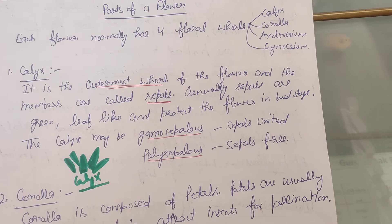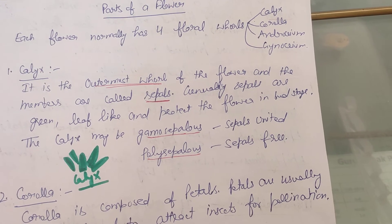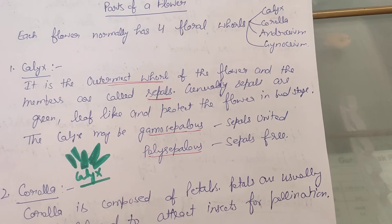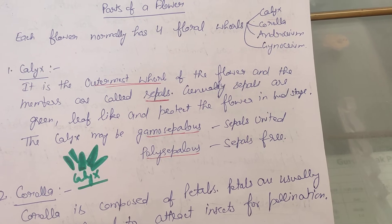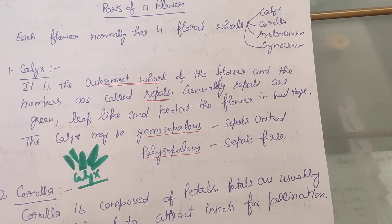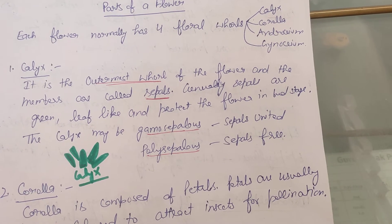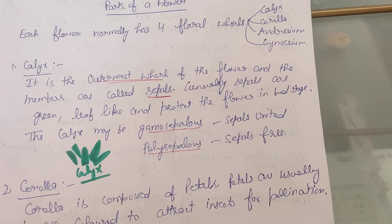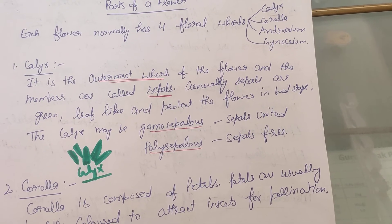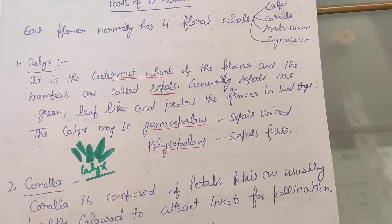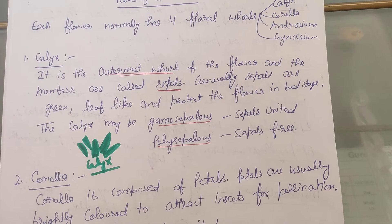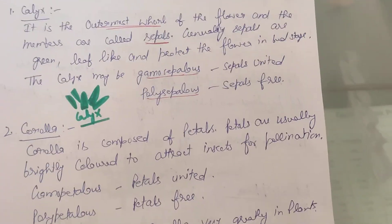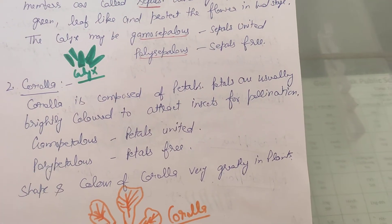The calyx may be of two types: gamosepalous and polysepalous. The members of calyx are known as sepals, so gamosepalous means when sepals are united, and polysepalous means when sepals are free. You can see the green-colored calyx in this diagram.